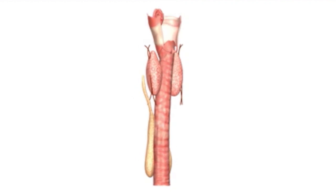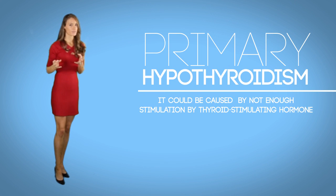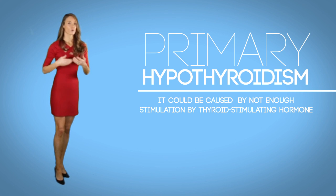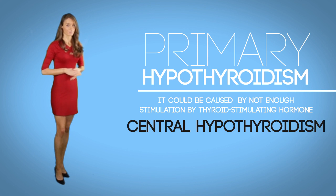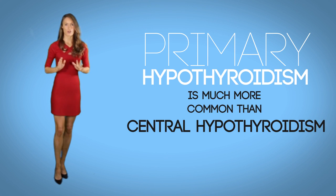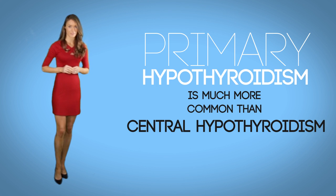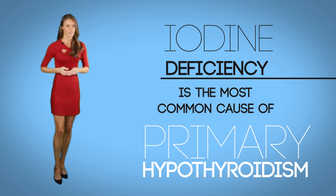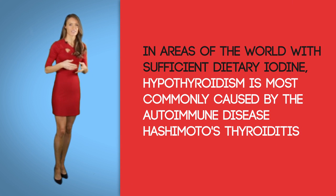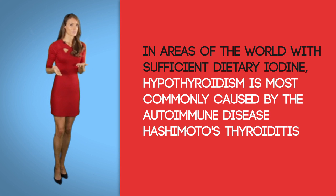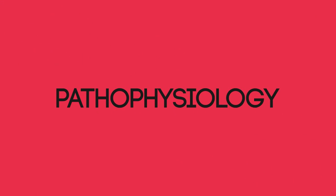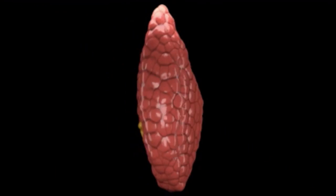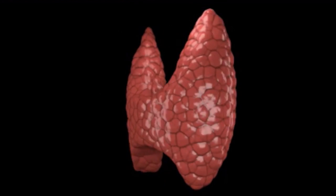Most of the time, hypothyroidism is caused by inadequate function of the gland itself, known as primary hypothyroidism. It could also be caused by not enough stimulation by thyroid stimulating hormone, known as central hypothyroidism. Primary hypothyroidism is much more common. Iodine deficiency is the most common cause of primary hypothyroidism globally; in areas with sufficient dietary iodine, it is most commonly caused by the autoimmune disease Hashimoto's thyroiditis.